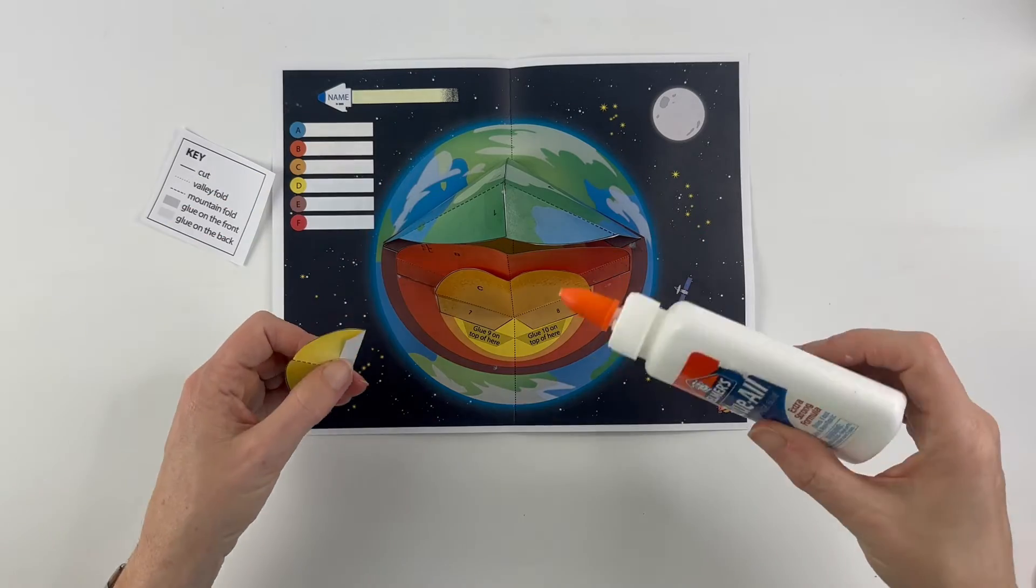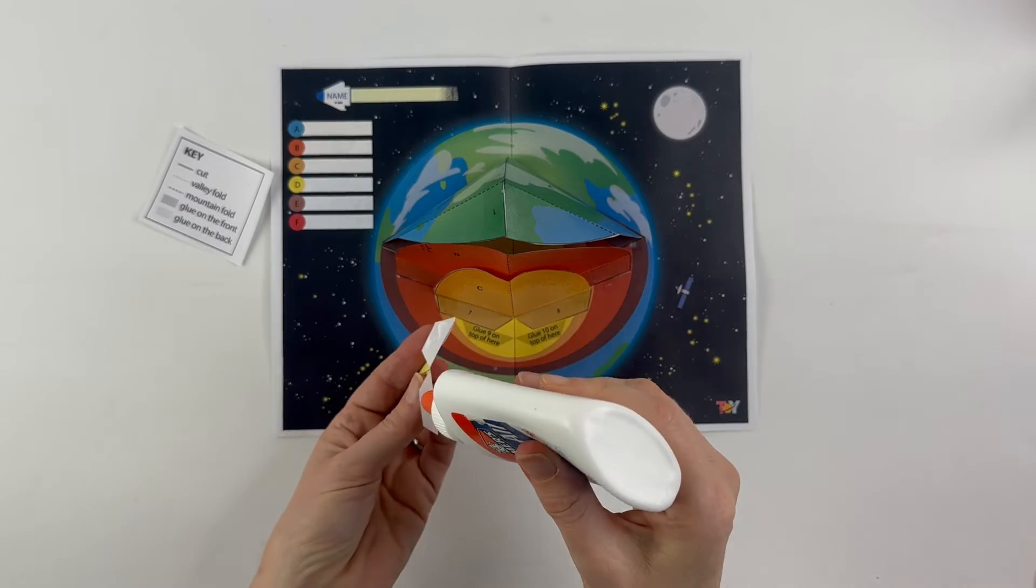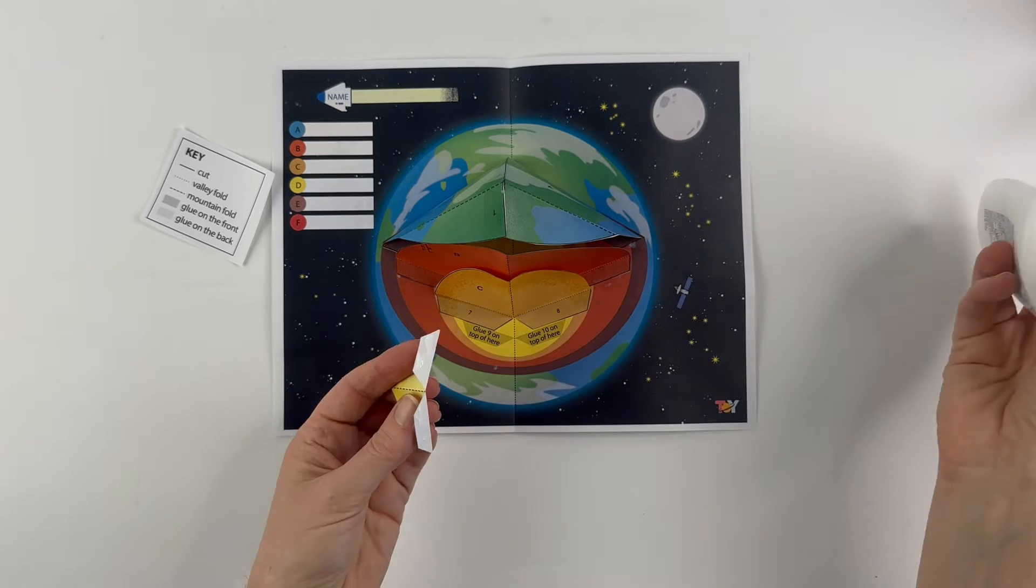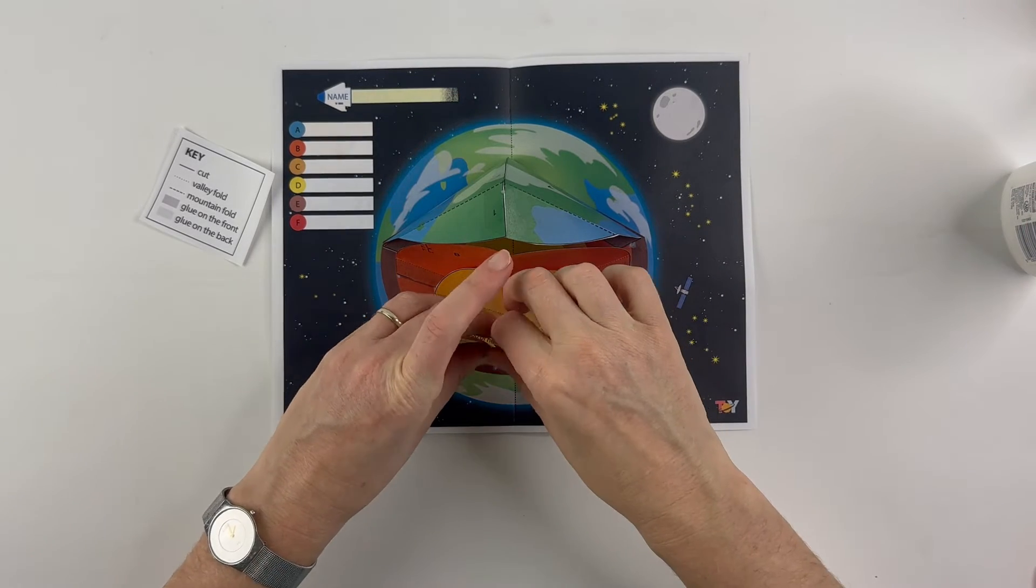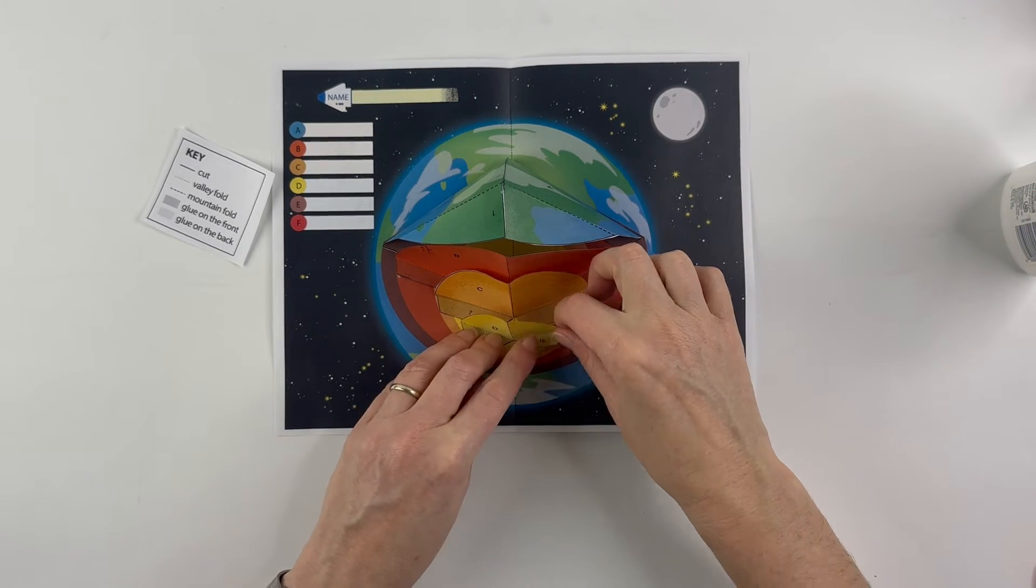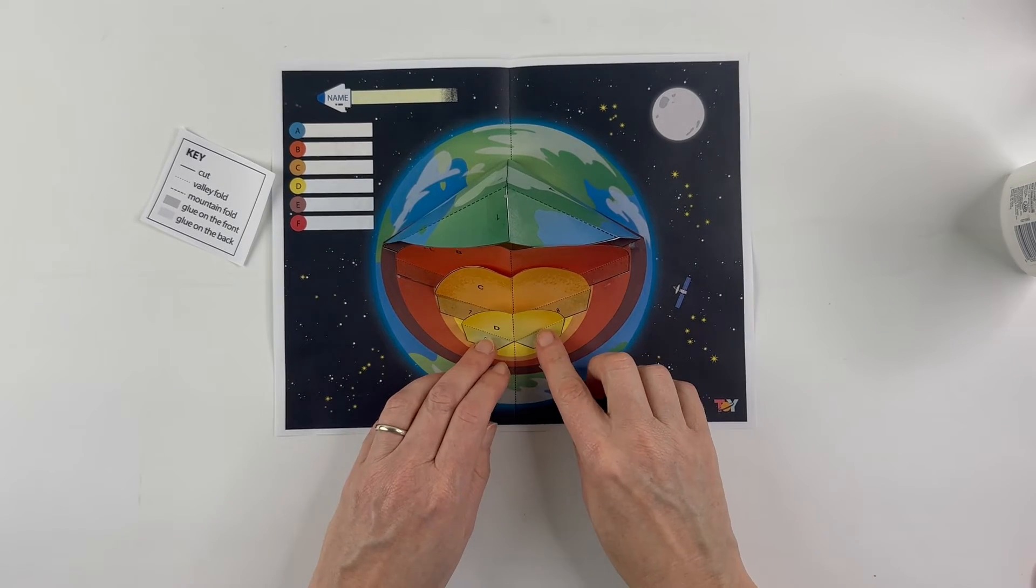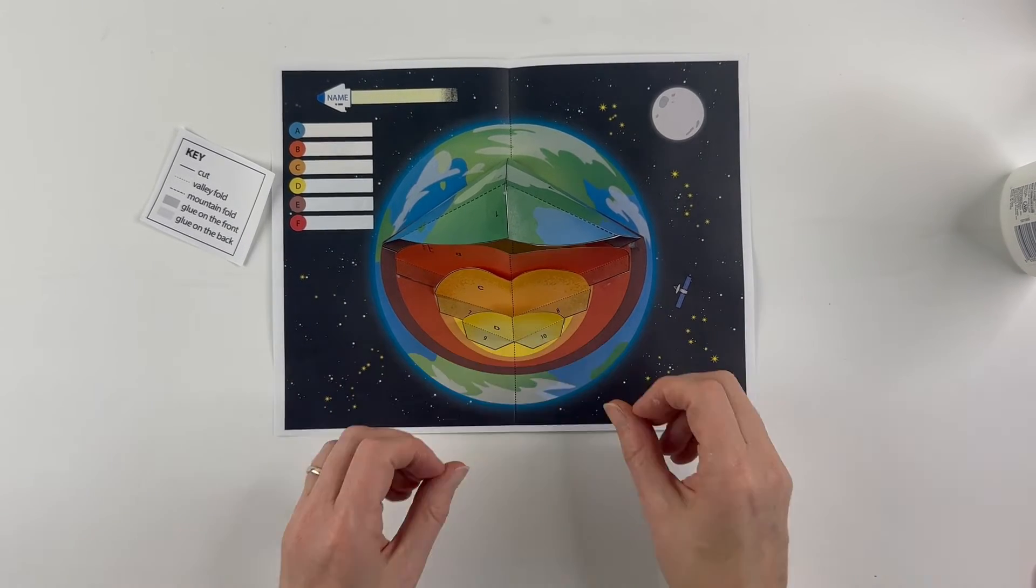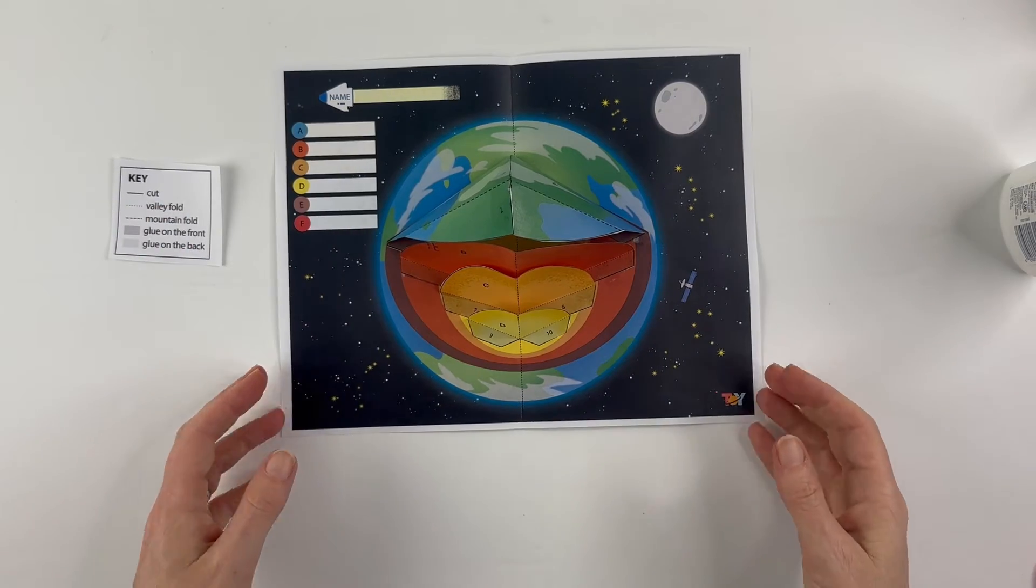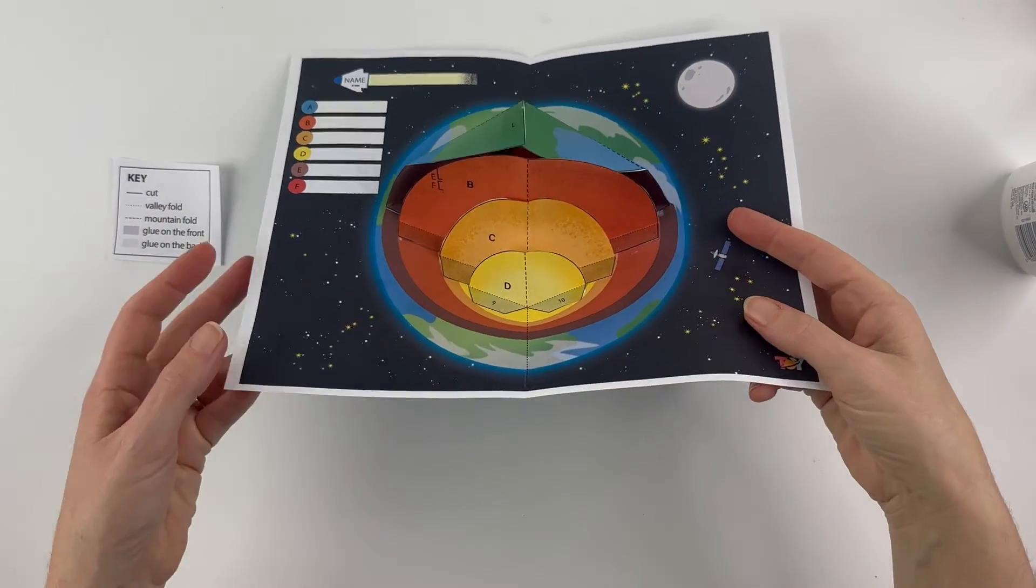And finally nine and ten. Making a funny sound with my glue. Okay. And that's it. You should obviously let it dry for a few minutes. And that is the layers of the earth model.